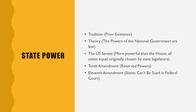The 10th Amendment says that if powers are not named in the Constitution, they are left to the states to determine whether to utilize them or not. The 11th Amendment says that states can't be sued in federal court without their permission. This has been modified by the 14th Amendment, which now says that states can be sued in federal court over civil rights, but not over those things that states traditionally do other than civil rights.